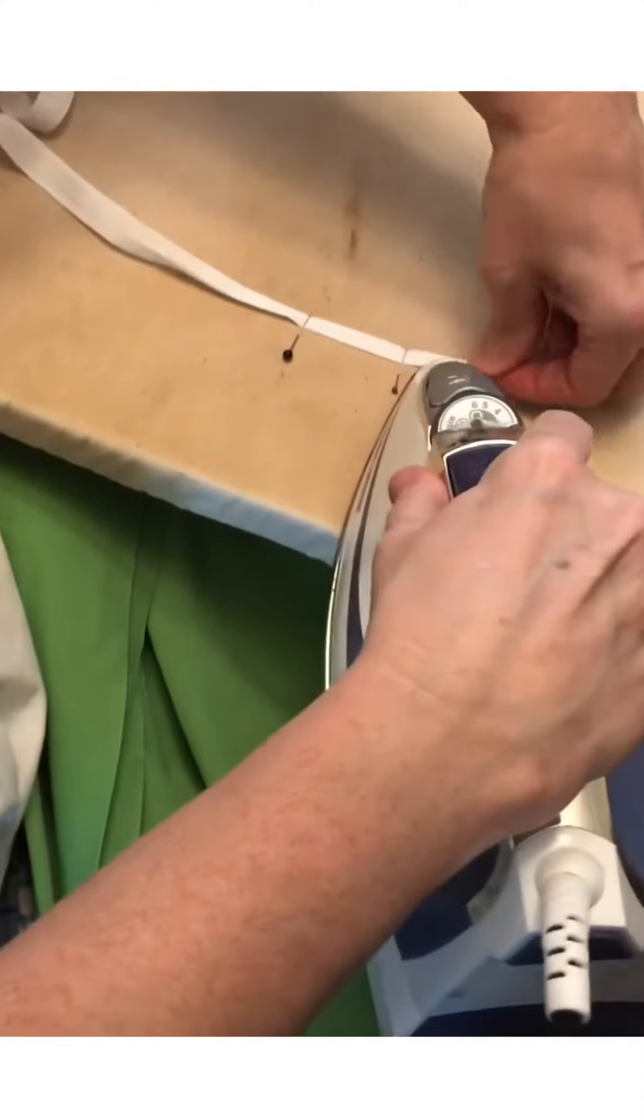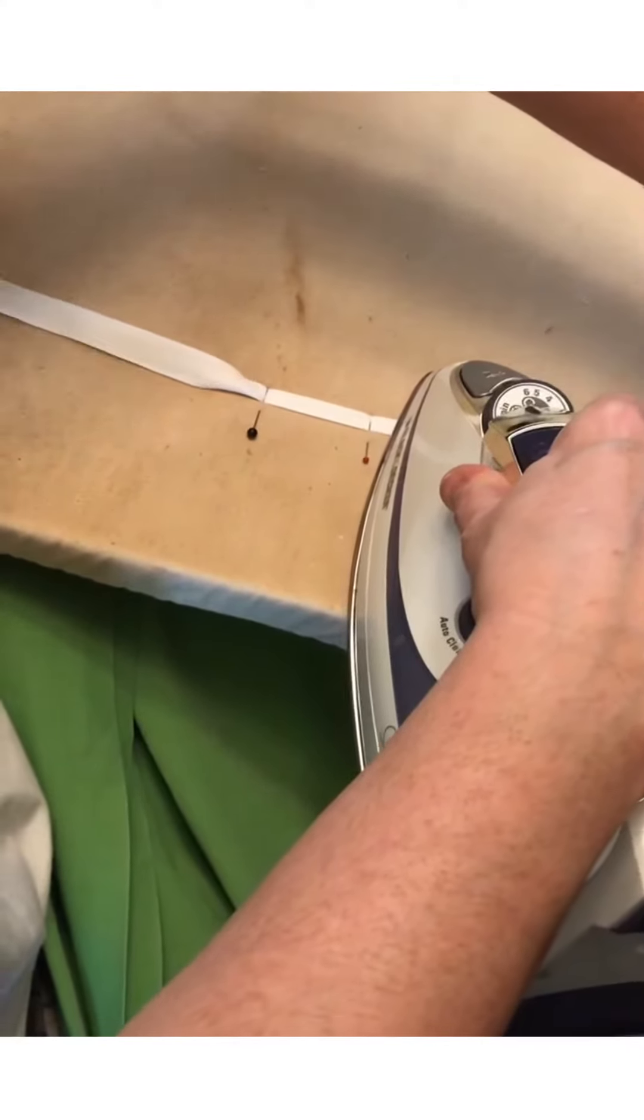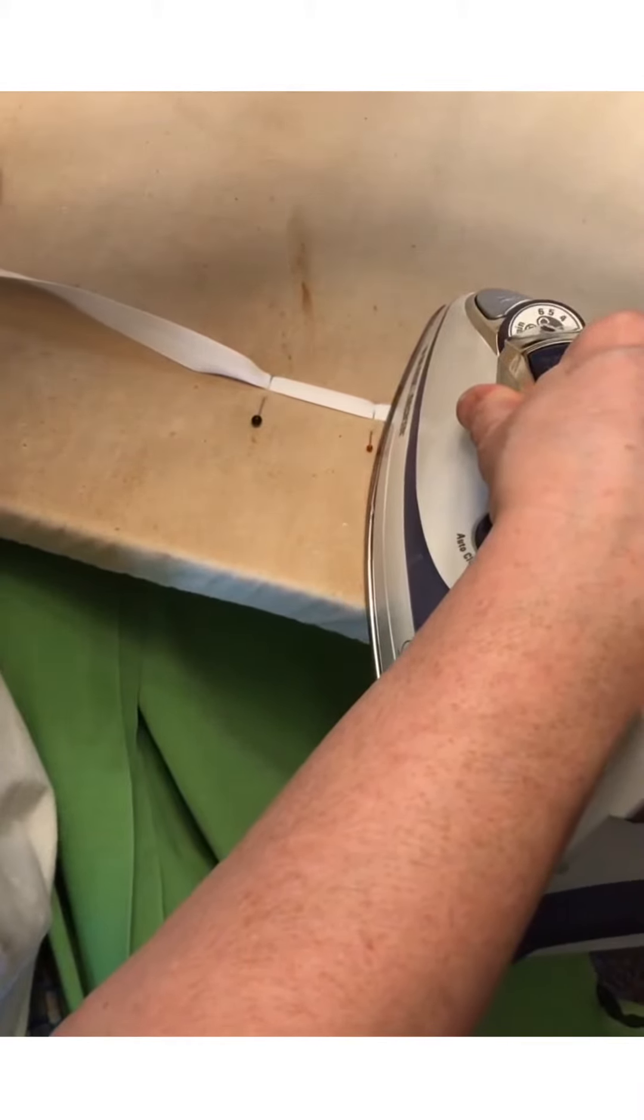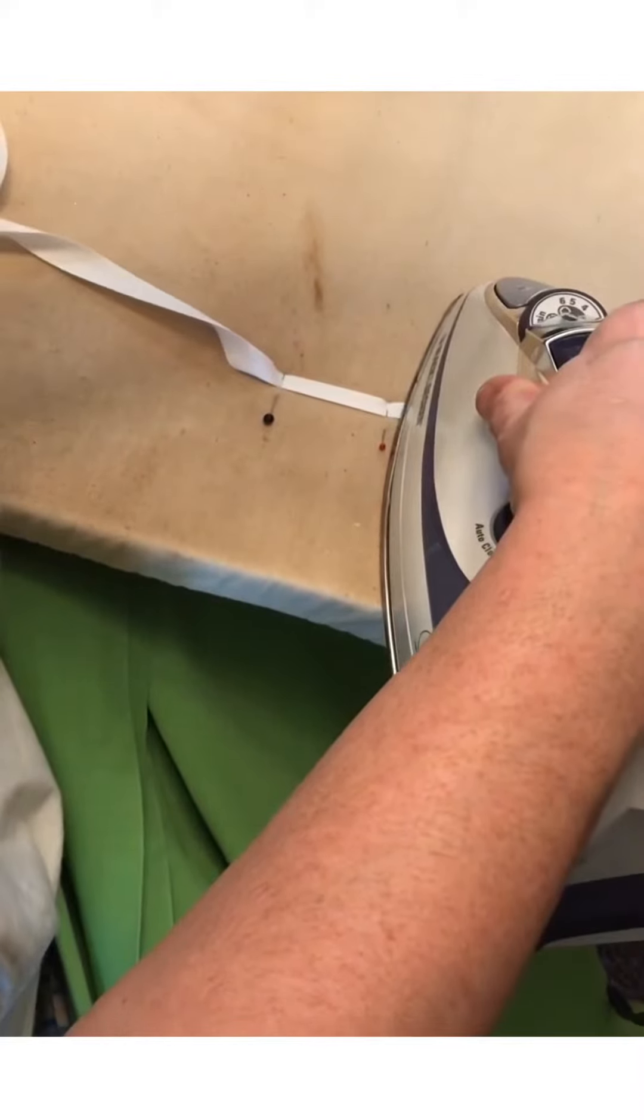So iron it and then as I pull it, hold the iron on top of it. And the pins keep the material folding as I'm pulling it through the pins. And holding that iron on there, it's ironing and making my bias tape nice and flat.